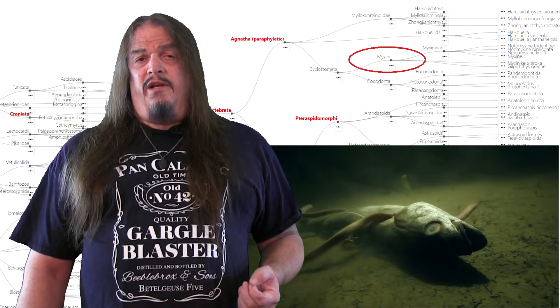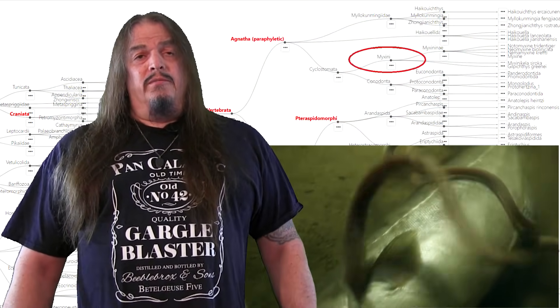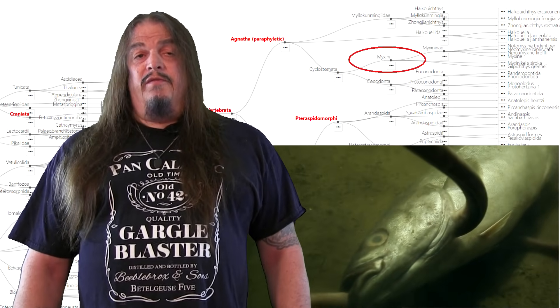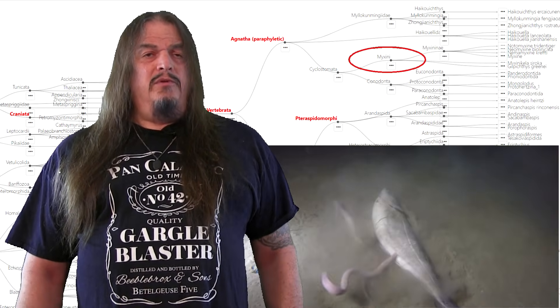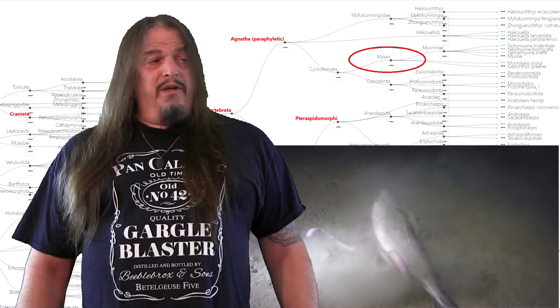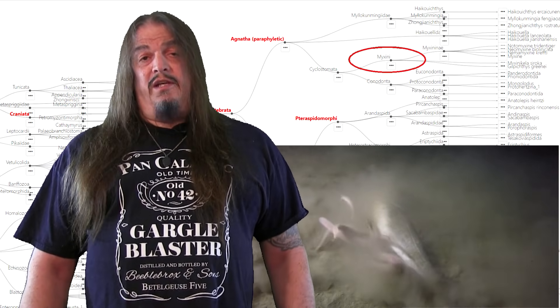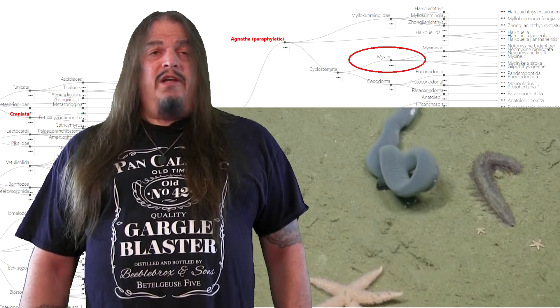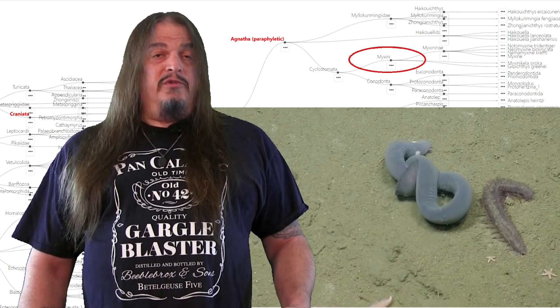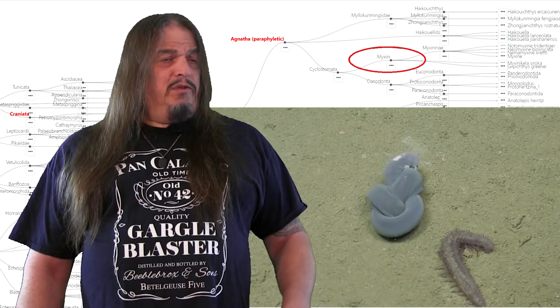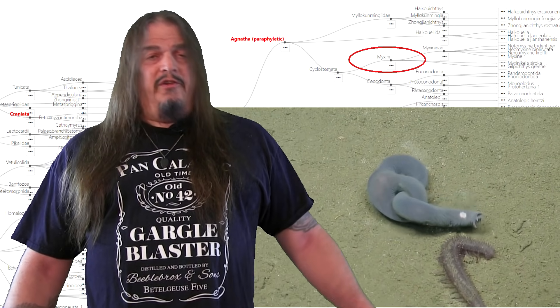Hagfish were once classified alongside lampreys because they have no vertebral column, but it turns out that hagfish embryos do develop a rudimentary vertebrae up to a point and then they're reabsorbed. This is another example of how embryological development parallels evolutionary development in a field of study called evo-devo. To confirm this, genetic evidence also indicates that these vertebrae were secondarily lost, just like they are in embryo. So hagfish are the only invertebrate vertebrates, at least as adults.